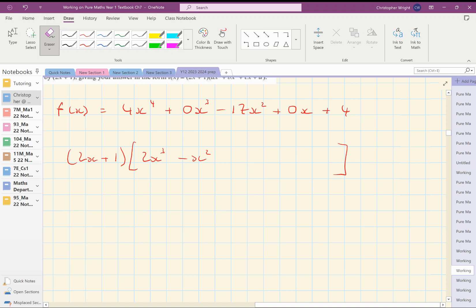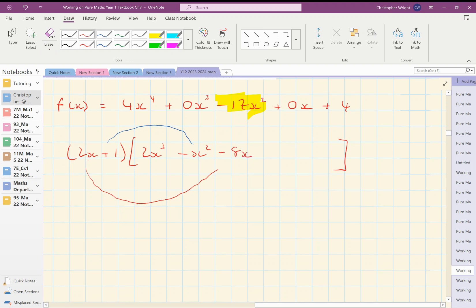Now, if I write minus x² there, that's going to give me minus x² in my answer, but I actually need minus 17x² total. So I'm going to need another minus 16x². How do I get that? Well, I'm going to write minus 8x here because 2x times minus 8x gives me that minus 16x². But if I write minus 8x there, I'm going to end up with minus 8x.